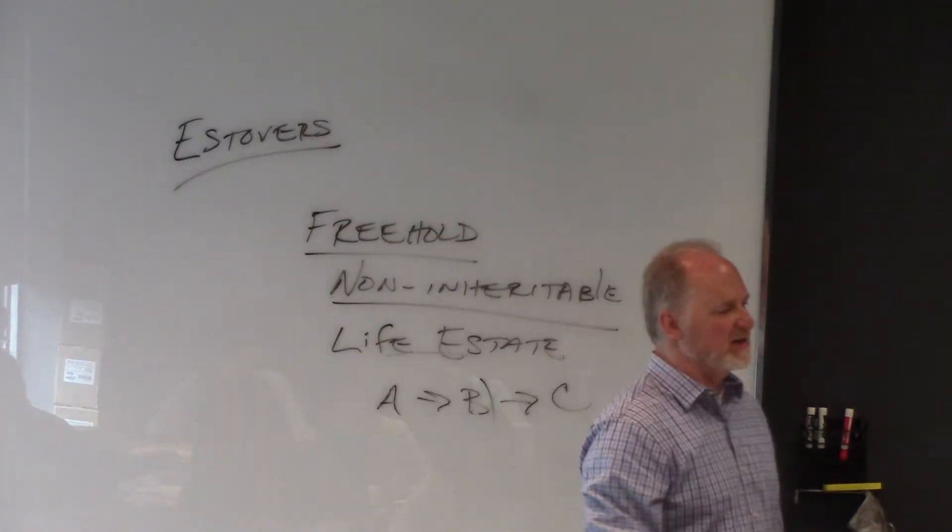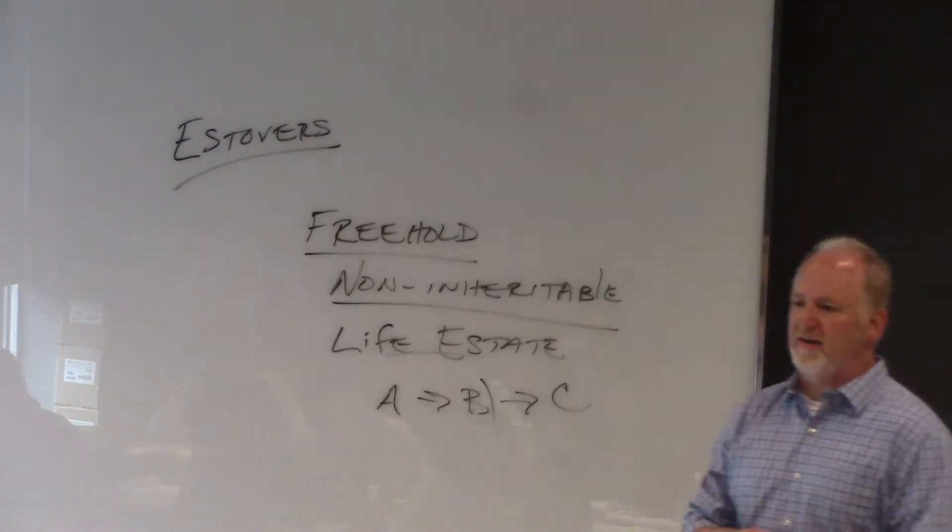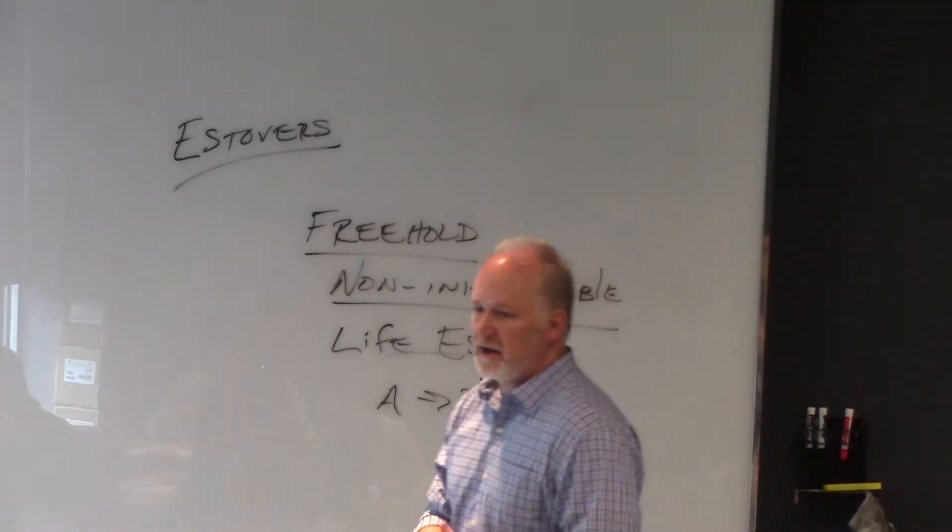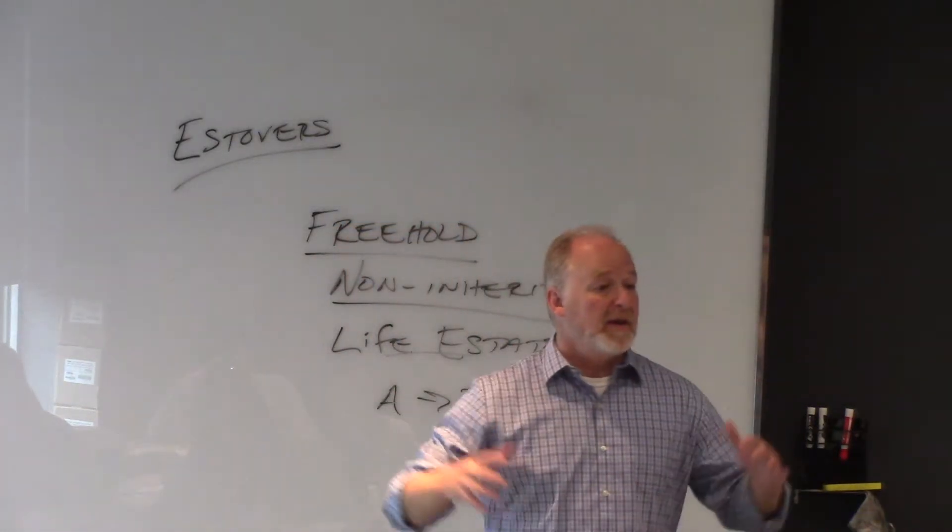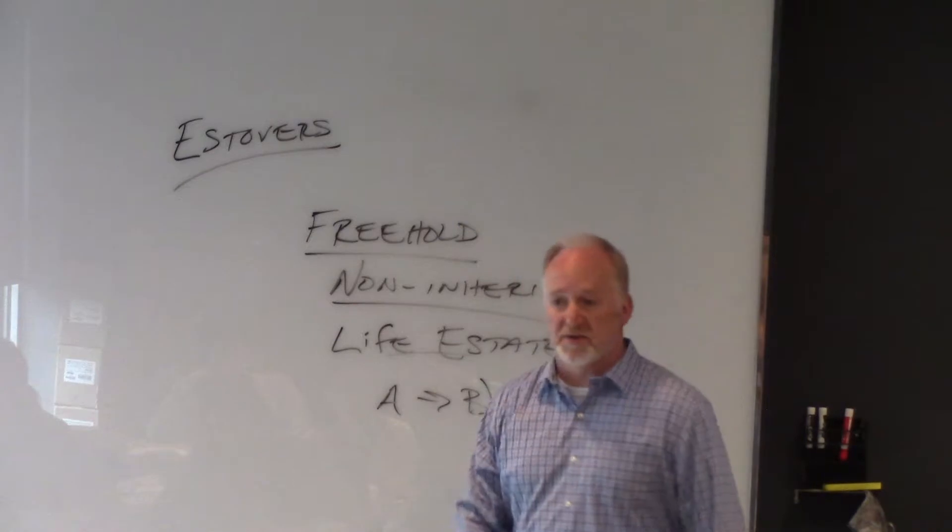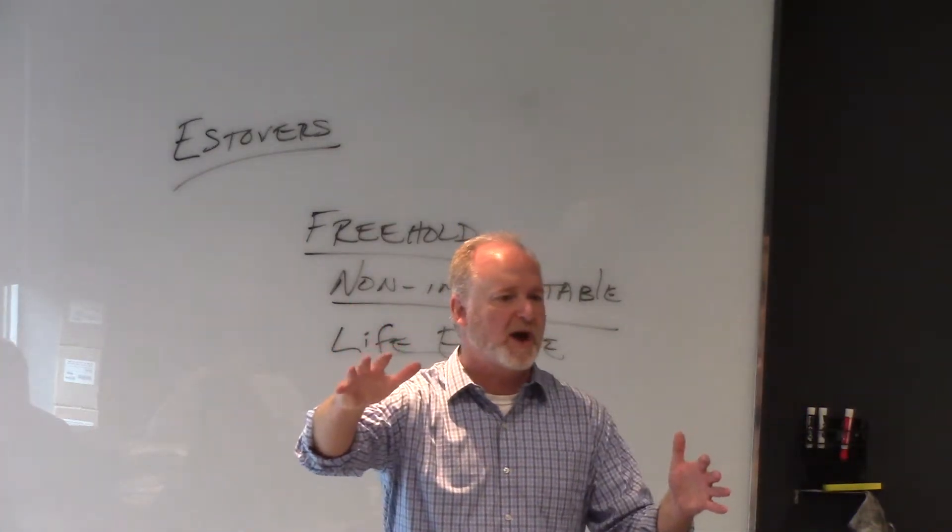Now, keep in mind, a lot of words in this class go back a few hundred years because real estate law goes back a few hundred years. So, historically, estovers may mean something like this. The property that the life tenant owns is a 40-acre estate with a log cabin on it, trees on the property.